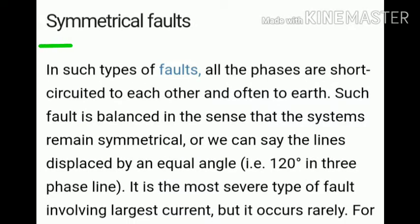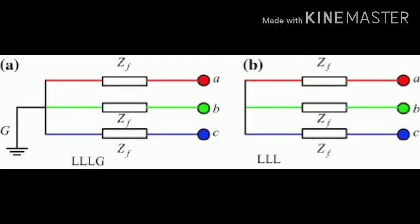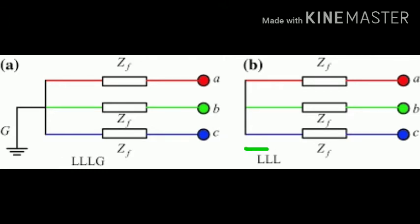First, we discuss the symmetrical fault. In a symmetrical fault, all phases are short-circuited to each other or to earth. This type of fault is called a balanced fault. All phases are at an equal angle of 120 degrees to each other. Here, the picture shows the symmetrical fault — three lines connected to the ground, which is one type of symmetrical fault.